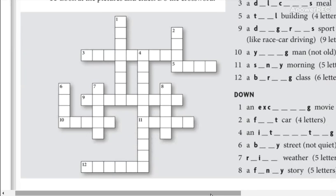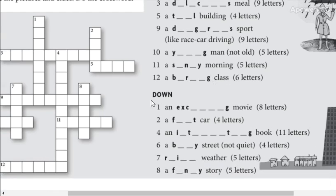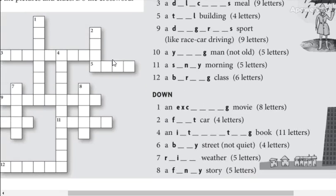So complete with the adjectives, and then you complete this chart. Across is horizontal, down is vertical. So using this information you can complete this.